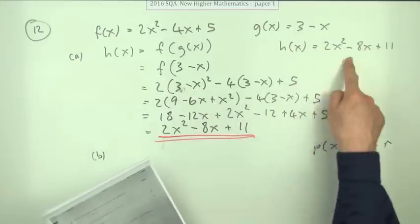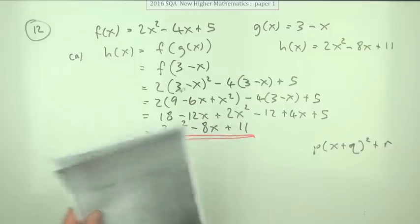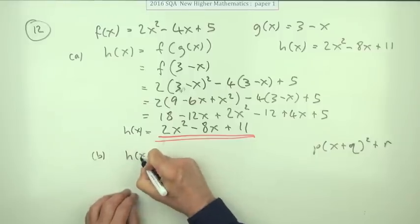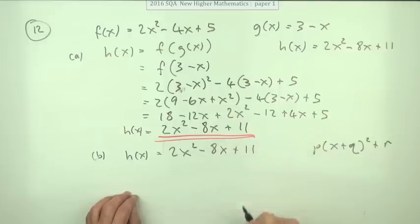Part B: Express this in the form p(x + q)² + r. Complete the square, in other words. Well, h(x) was—I don't know why I'm writing it down again—just because it was a new part.